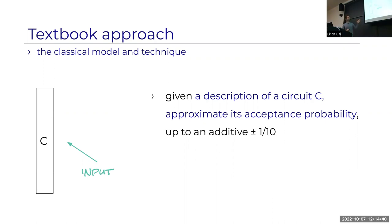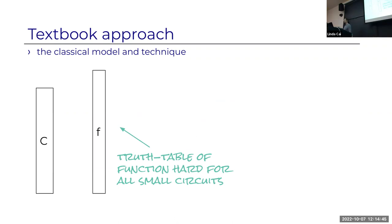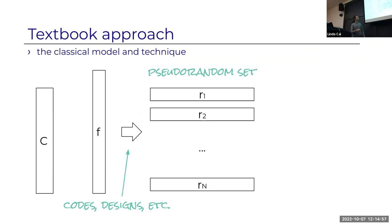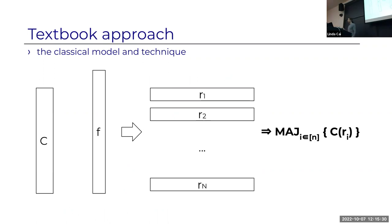Using the classical method of PRGs and lower bounds: the first step is to write down the truth table of a function that's hard for all circuits—our assumption provides this. Then we invoke a transformation of this hard truth table into a set of pseudorandom strings. This uses tools like error-correcting codes, polynomials, combinatorial designs, and hash functions—several classical families of transformations. We evaluate the circuit on this pseudorandom set and output the result. The classical analysis shows that if the function is hard, this works.